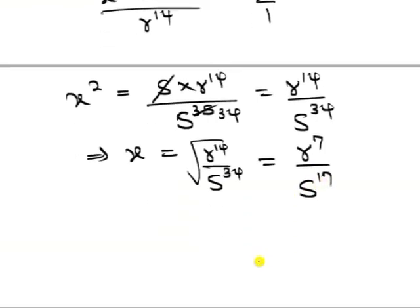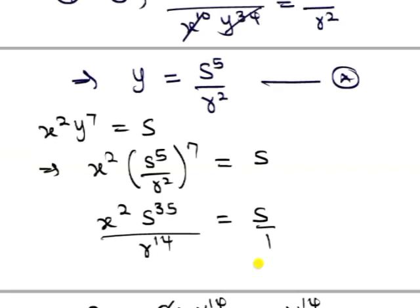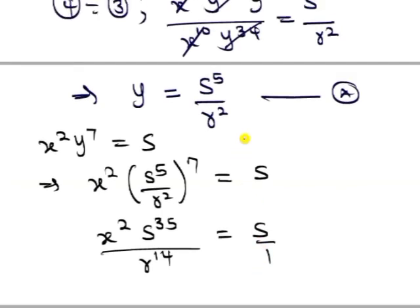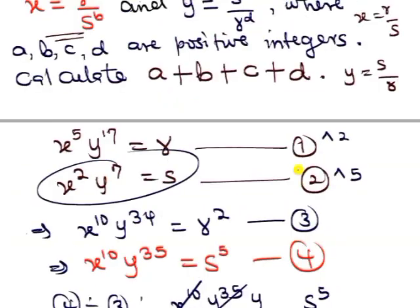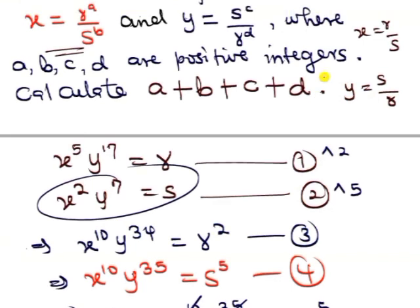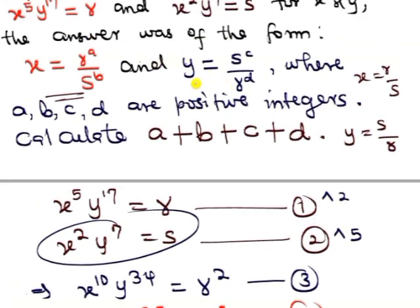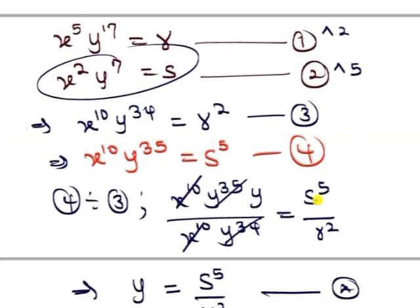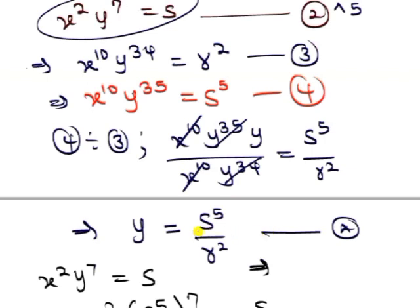And that is our x. So from what we did originally for y, you can easily now note that, remember from the question, y = s^c / r^d. And here we got that y = s^5 / r^2. So that means c is 5 and d is 2.